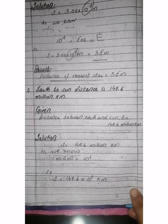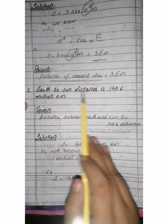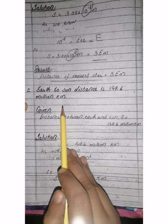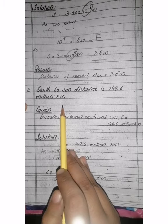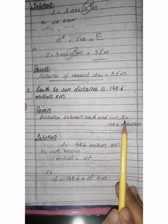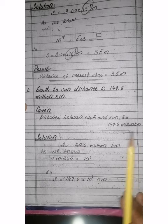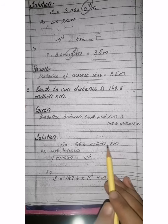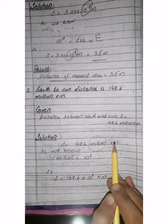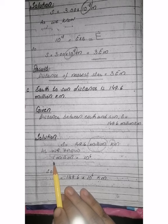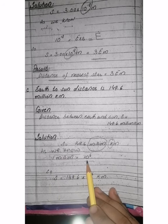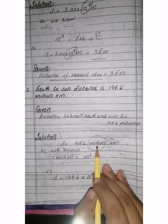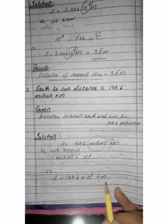Now you have Part C of question number 1: Earth to Sun distance. The distance between the Sun is 149.6 million kilometers. Now you have to change it into prefix form with powers of 10. Given: distance between Earth and Sun s is equal to 149.6 million kilometers. First of all, you have to substitute the million value, then deal with the kilometer prefix.